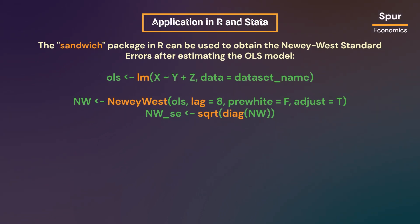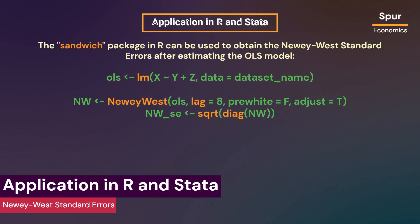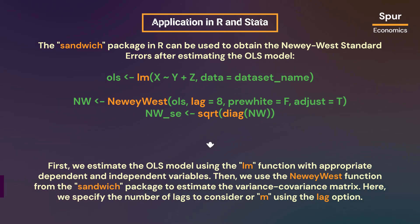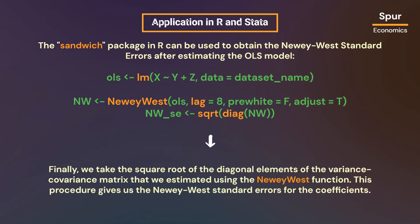The sandwich package in R can be used to obtain the Newey-West standard errors after estimating the OLS model. First, we estimate the OLS model using the lm function with appropriate dependent and independent variables. Then, we use the NeweyWest function from the sandwich package to estimate the variance-covariance matrix. Here, we specify the number of lags to consider, M, using the lag option. Finally, we take the square root of the diagonal elements of the variance-covariance matrix to get the Newey-West standard errors for the coefficients.